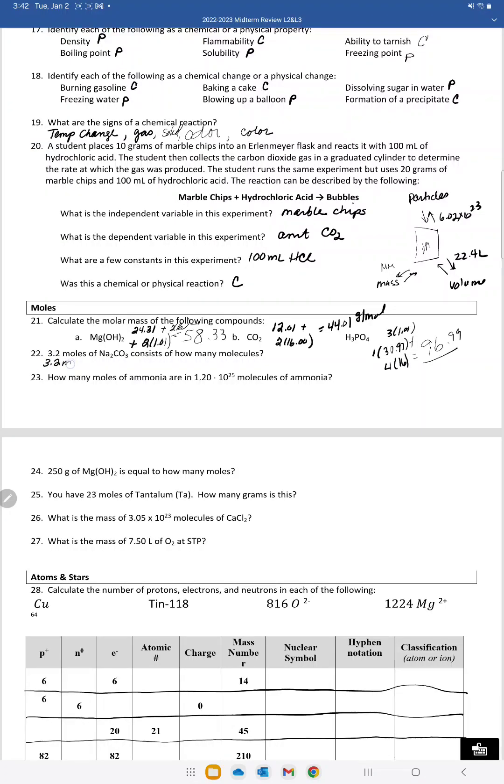If I have 3.2 moles, put it over one, mole comes down, molecule goes to the top. One is always going next to mole. And then I have 6.02 times 10 to the 23. So I'm multiplying by Avogadro's number and I get 1.93 times 10 to the 24. And make sure you know how to hit this into your calculator.